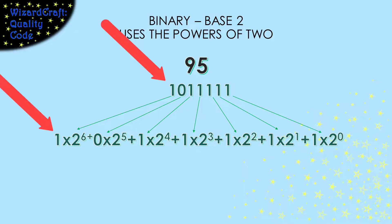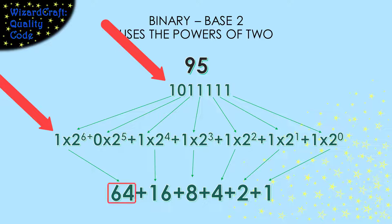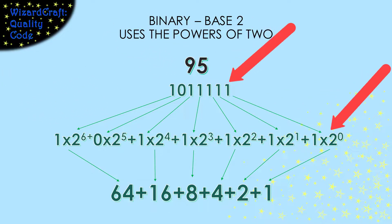So the leftmost 1 is in the position associated with 2 to the sixth power, which is 64, so it adds 64 to the value. Similarly, the rightmost 1 is associated with 2 to the zeroth power, which is 1, so it adds 1 to the value. Add up the powers of 2 for the positions that have 1s, and you have the decimal number that represents the same value that the binary number represented.